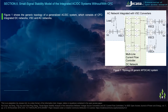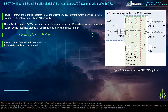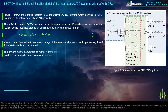The system consists of CFC-integrated DC networks, VSC, and AC networks. The CFC-integrated AC/DC system model is represented in differential algebraic equations (DAEs) and is linearized around an equilibrium point in state space form, where delta-x and delta-u are the incremental change of the state variable vector and input vector, and A and B are the state matrix and input matrix.